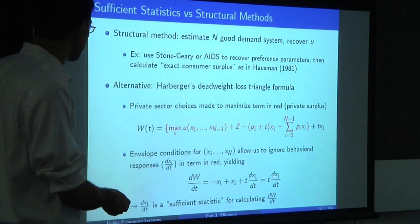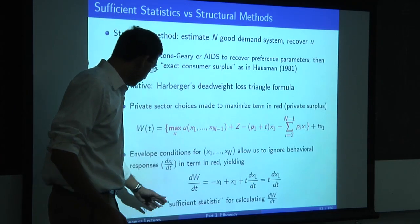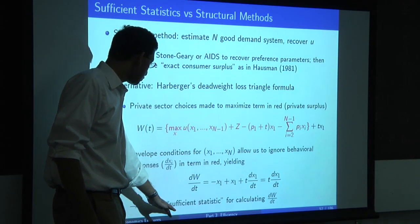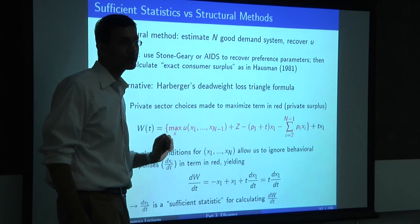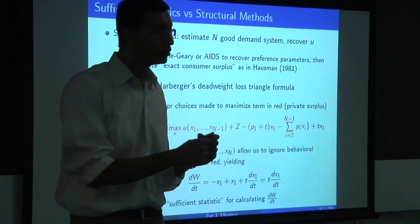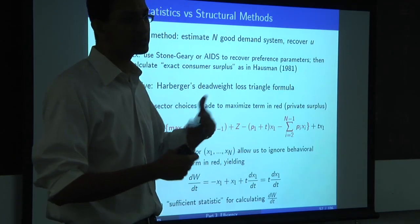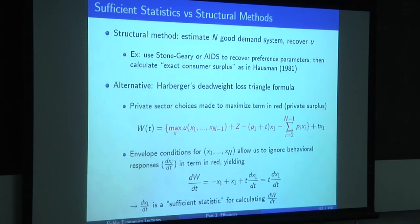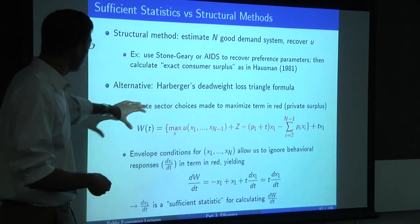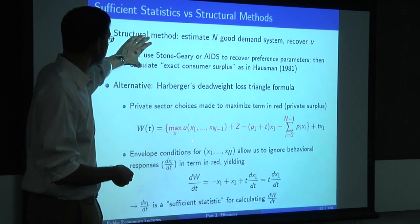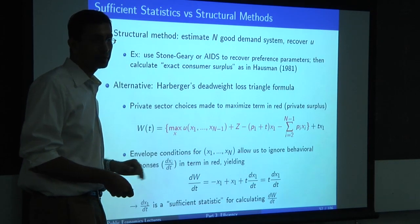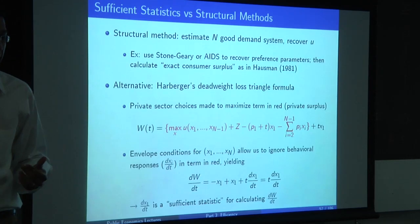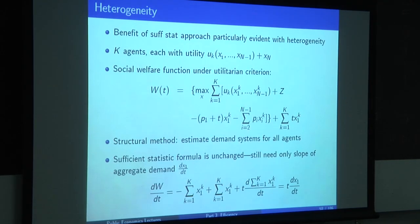So dW/dT equals T times dX1/dT. In this simple setting, dX1/dT is a sufficient statistic for calculating dW/dT. I do not need to know dX2/dT, dX3/dT, or all the cross-price elasticities—assuming there are no taxes in the other markets. Rather than estimating the n-good demand system, all I have to do is estimate the slope of that one demand curve.